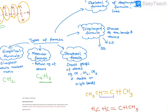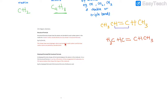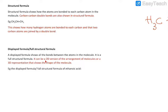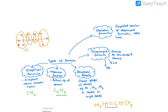Displayed formula shows all the bonds and all the atoms. It can be a 2D version or a 3D version. So if you look at this molecule, this is already a displayed formula — you show all the bonds and all the atoms. This is a 2D version of the displayed formula. You can also have a 3D version where you show atoms that go inside the plane or outside the plane.